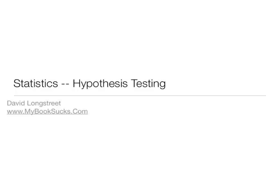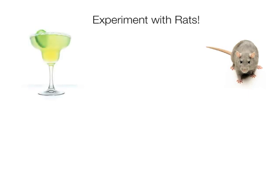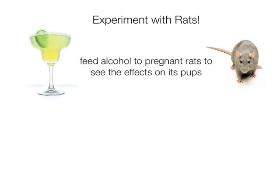I'm going to talk about hypothesis testing and the example we did in class works for all statistics classes actually. So we took data from rats and alcohol. We fed alcohol to pregnant rats to see the effect on its pups.